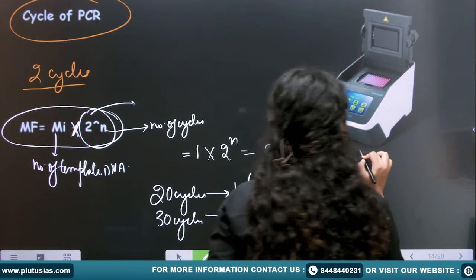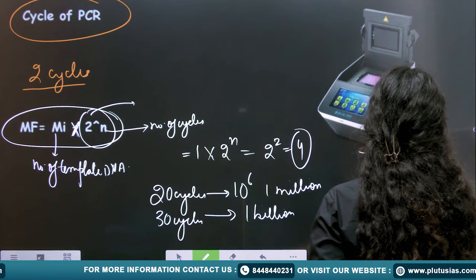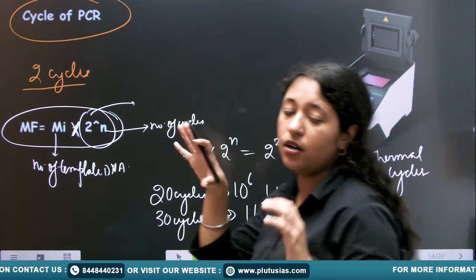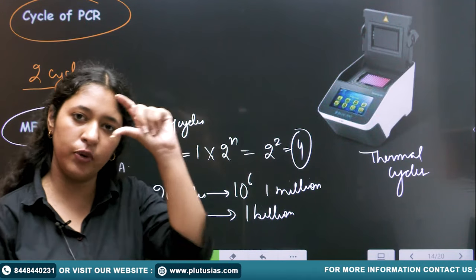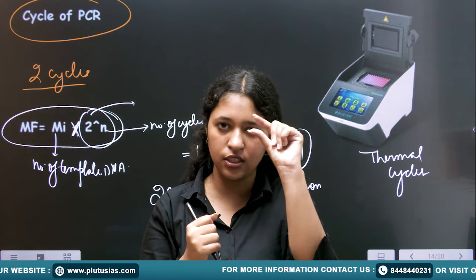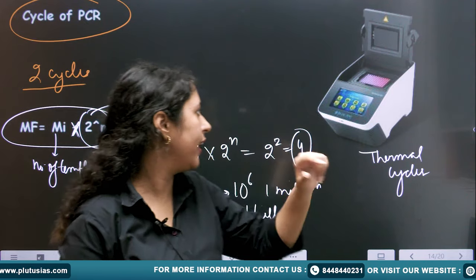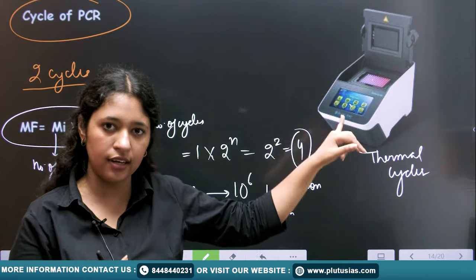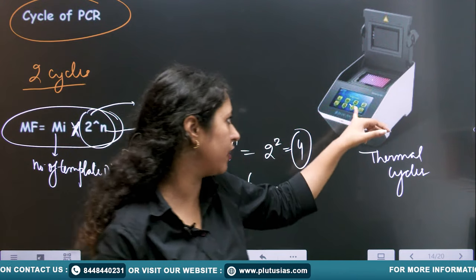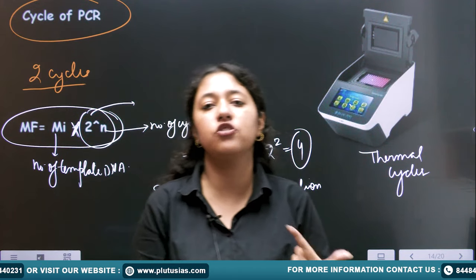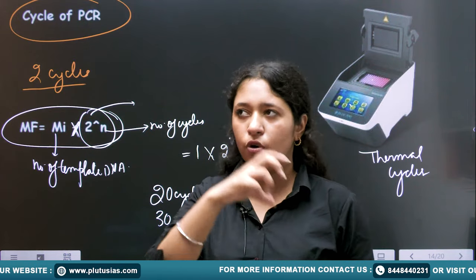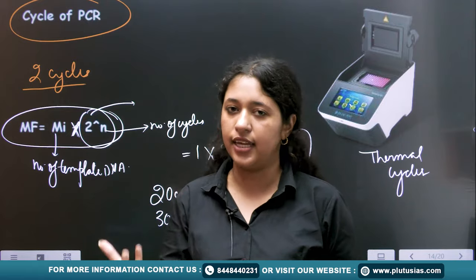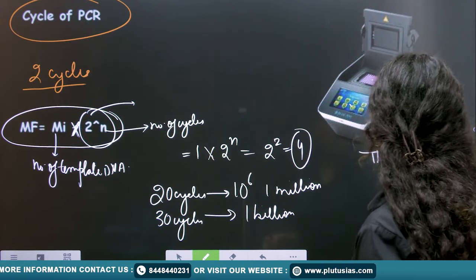The thermal cycler is the instrument in which PCR is performed. We put all the components in small microtubes, place the tubes in the machine, and set the temperature, number of cycles, and amount of DNA. The temperature is run for 3–4 hours according to the product and timing decided.